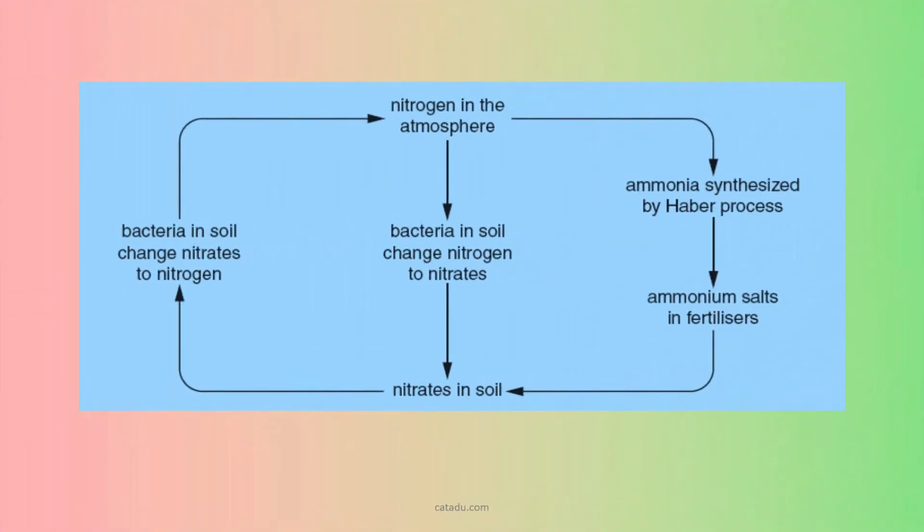In the air, the nitrogen has almost 79 percent. This can be used to make nitrate in the soil in two different ways.